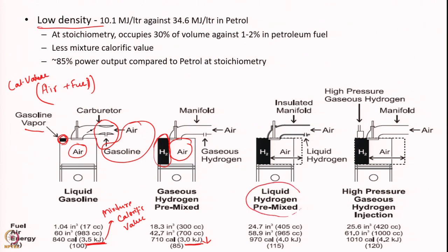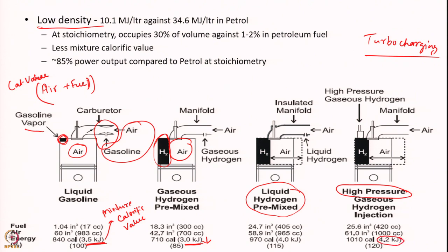Liquid hydrogen premixing is one option but not very attractive. A better option is turbocharging — supplying high-pressure air and hydrogen so that more fuel can be put into the engine per cycle, easily going beyond 3.5 kilojoules. Typically though, because of emissions concerns, we prefer to run a little lean, meaning we supply less fuel than the stoichiometric requirement.